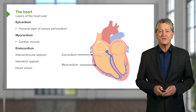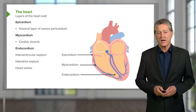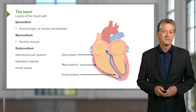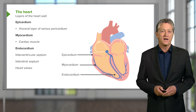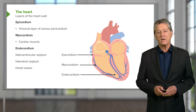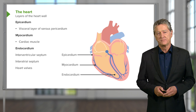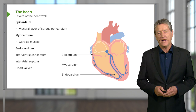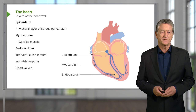And then internally, the endocardium lines the entire inner surface of the heart. It lines the heart valves as well, and the septum between the atria and both ventricles, called the interatrial and interventricular septums.